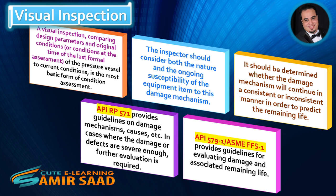It should be determined whether the damage mechanism will continue in a consistent or inconsistent manner in order to predict the remaining life. API 579, ASME-FFS, provides guidelines for evaluating damage and associated remaining life.